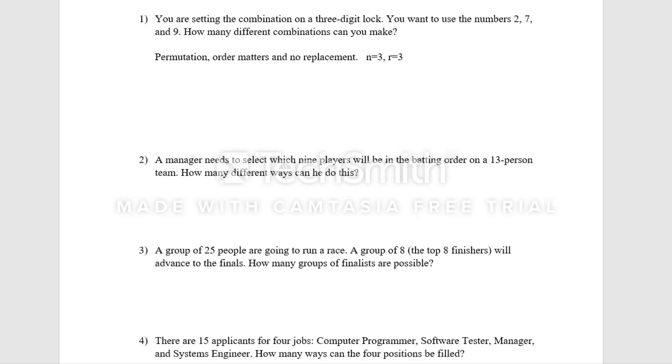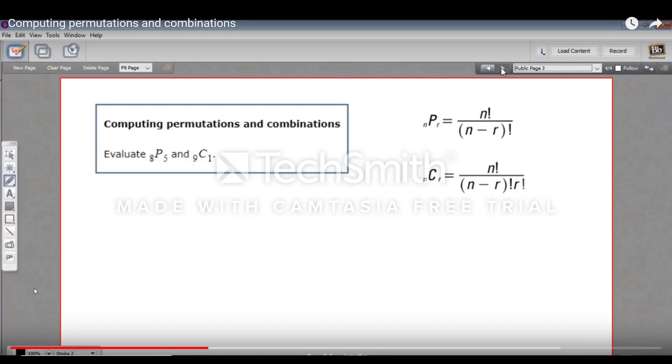So our formula here is n factorial over n minus r factorial. So in our case, it's going to be three factorial over three minus three factorial. And in the next video, we will learn how to solve problems using factorials.